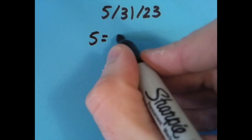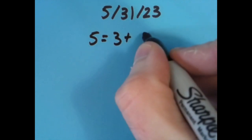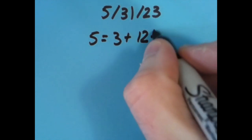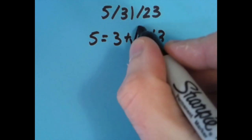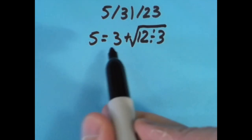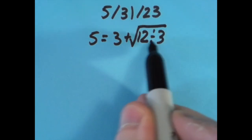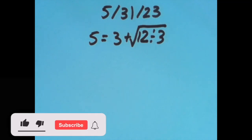I said that 5 equals 3 plus, then we're going to do 12 divided by 3 to get 4, and take the square root of that 4 to get 2. So we have 3 plus 2 equaling 5, and that's what I did.